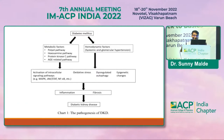Regarding the pathogenesis of diabetic kidney disease, in diabetes mellitus various metabolic and hemodynamic factors together cause activation of intracellular signaling pathways, oxidative stress, dysregulated autophagy, and epigenetic changes, which leads to inflammation and fibrosis, ultimately resulting in diabetic kidney disease.